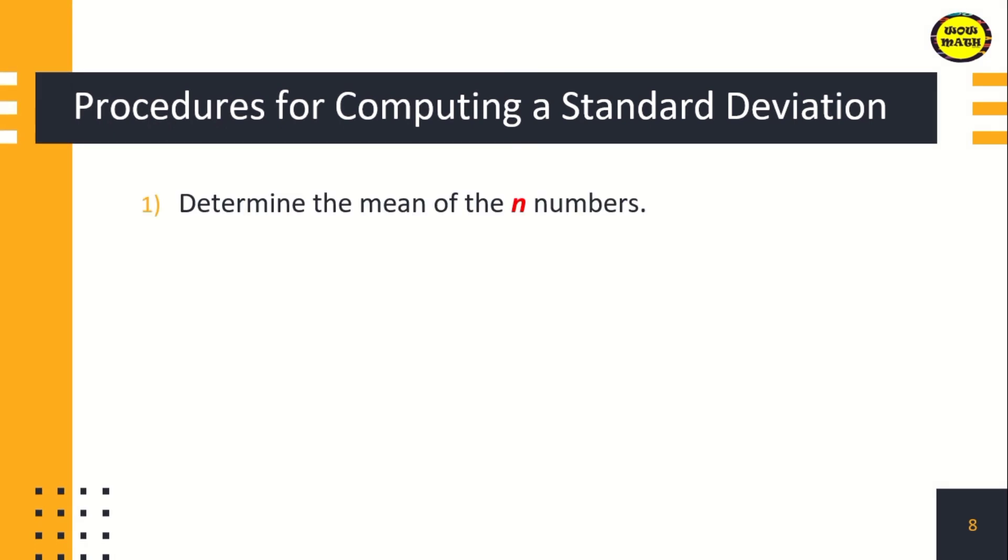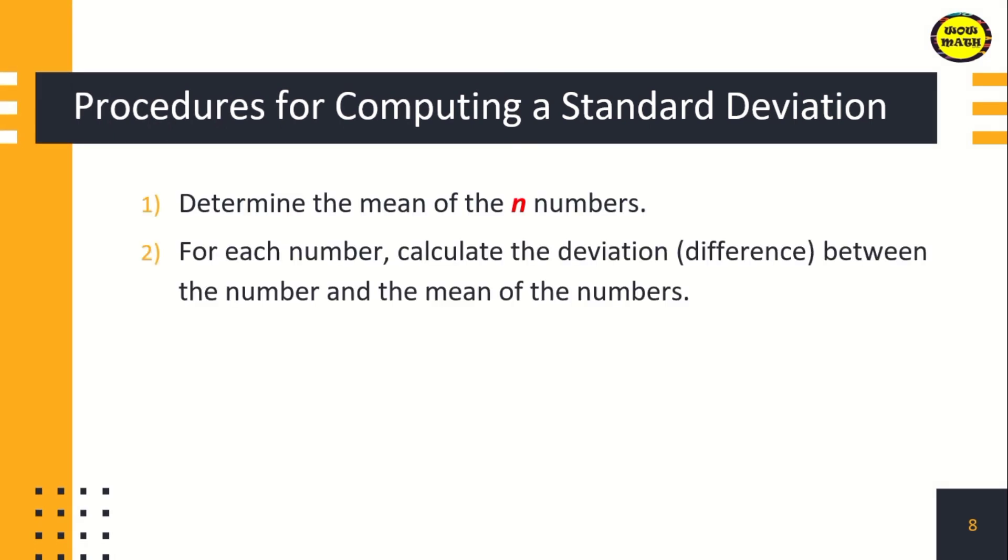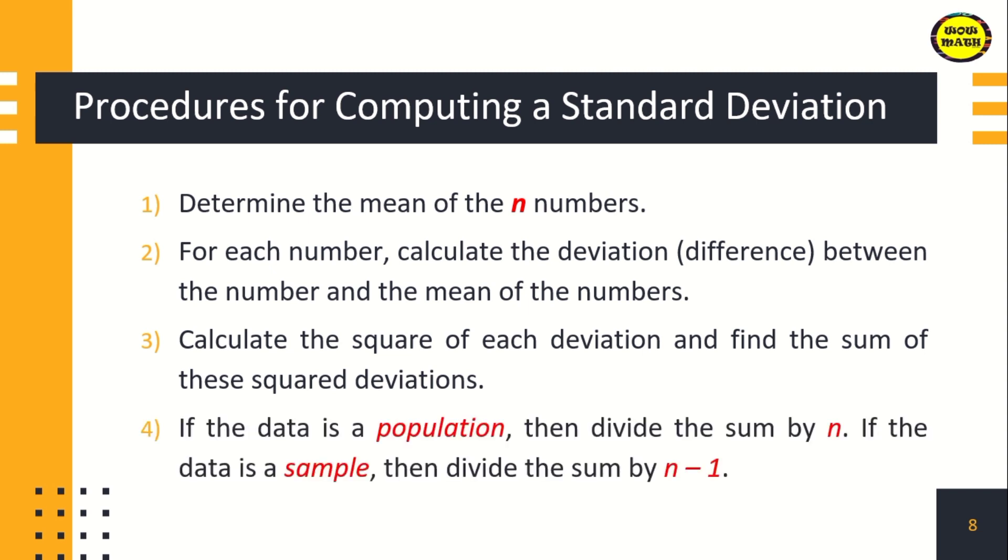So for example, these are the procedures for computing standard deviation. First, determine the mean of the n numbers. Second, for each number, calculate the deviation or the difference between the number and the mean. Third, calculate the square of each deviation and find the sum of the squared deviations. Fourth, if the data is a population, divide the sum by n. If the data is a sample, divide by n minus 1. Lastly, find the square root of the quotient.